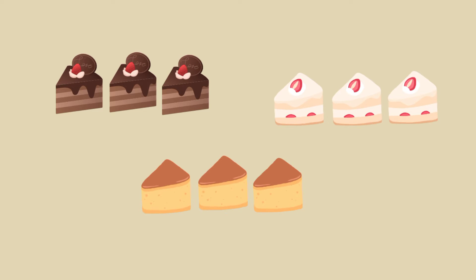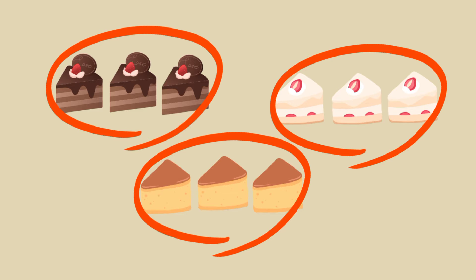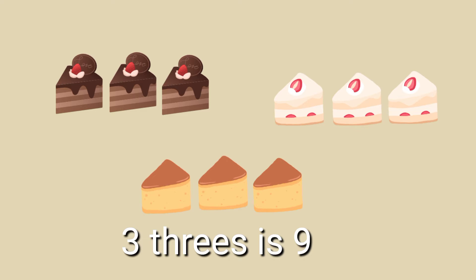Now look at the cakes. How many groups of three do you see? How many cakes are there in all? There are three groups of three. There are nine cakes in all. Three groups of three is equal to nine, or three threes is nine.